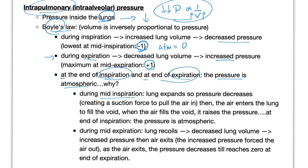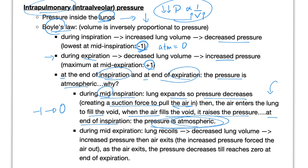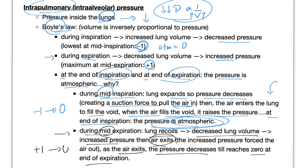Why? Because during mid-inspiration, your lung expands, the pressure decreases, creating a suction force to pull the air in. Then the air enters your lung to fill the void, because nature hates the vacuum. When the air fills the void, it raises the pressure. Therefore, at the end of inspiration, your pressure is back to atmospheric — from negative 1 at mid-inspiration to 0 at end of inspiration. Same thing in expiration: during mid-expiration, lung recoils, decreasing lung volume, increasing pressure, which pushes the air outside. As the air exits, the pressure decreases till it reaches 0 at end of expiration.